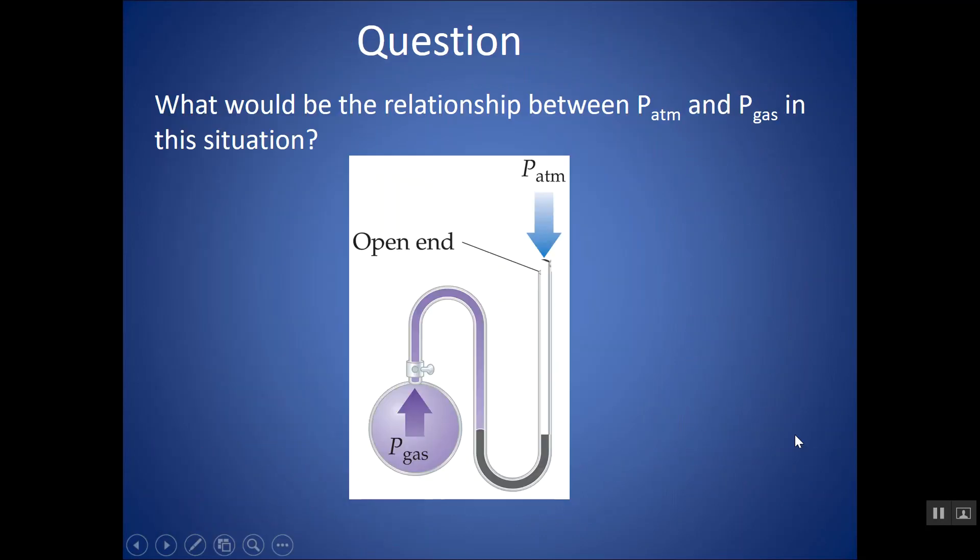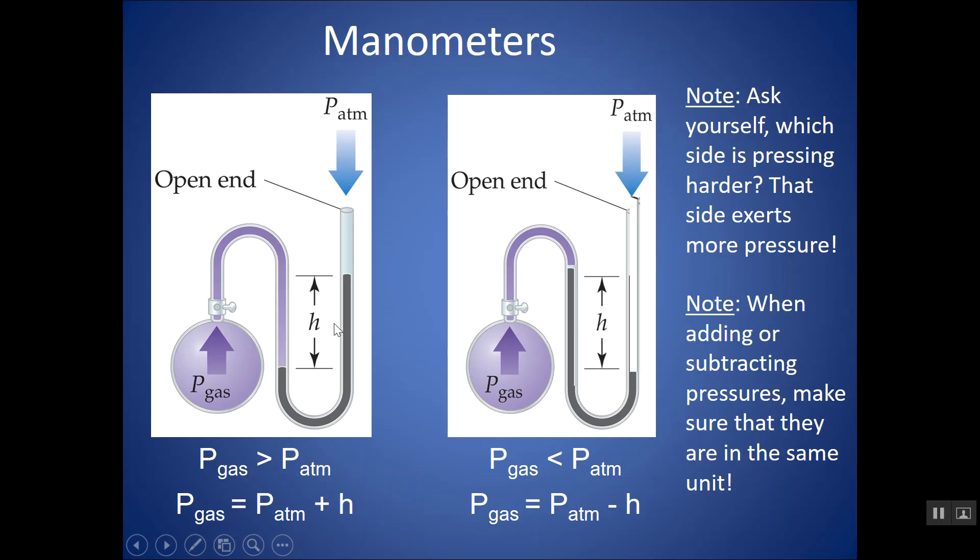So when you're doing these kinds of problems, you kind of want to either look at the description or look at the picture and see what's pressing harder. So if I look at this first image, and I look at the U-tube, the gas is pressing here on this column of mercury and the atmosphere is pressing here. What is pressing harder? The gas must be pressing harder, which is causing this mercury to shift. That's why this end is lower here. So whichever side has the lower side of the mercury column is pressing harder. So the pressure of the gas is higher than the pressure of the atmosphere. So what I want to do for a situation like this is set up an equation like this: the pressure of the gas equals the pressure of the atmosphere plus the height.